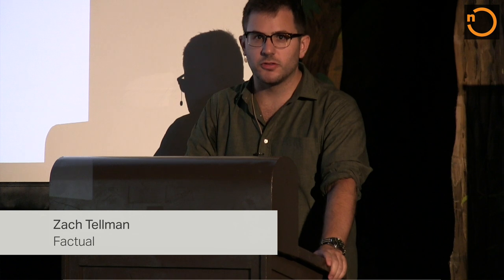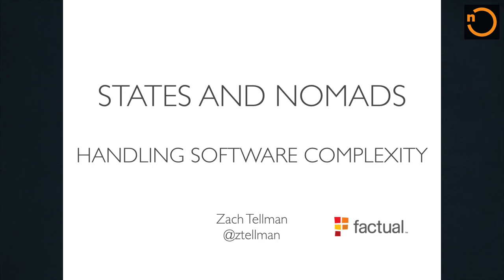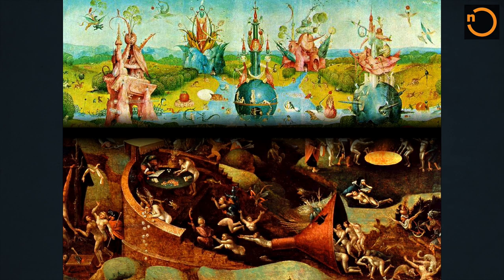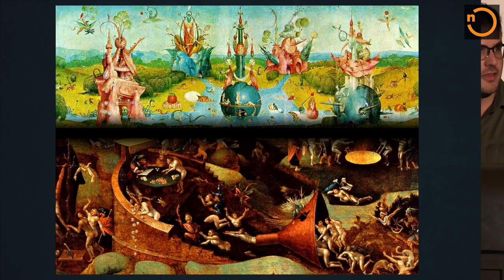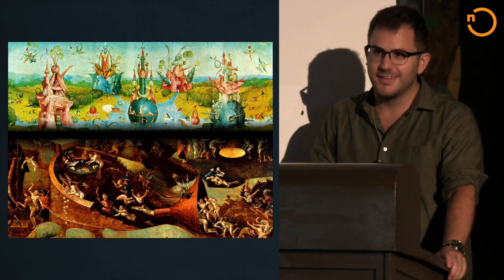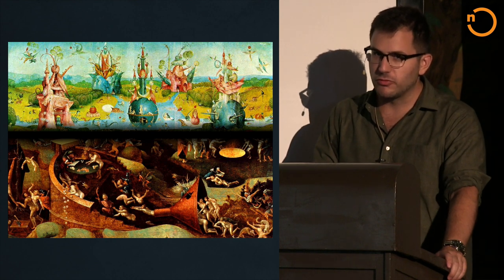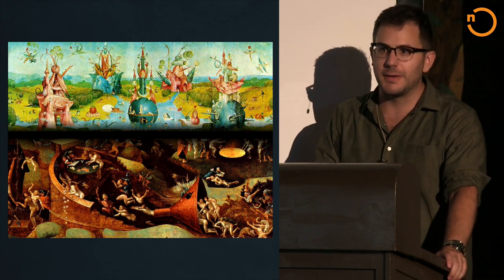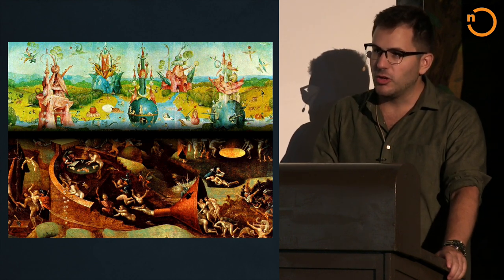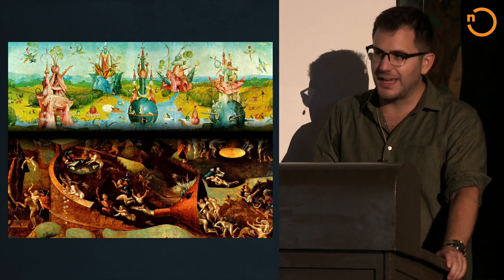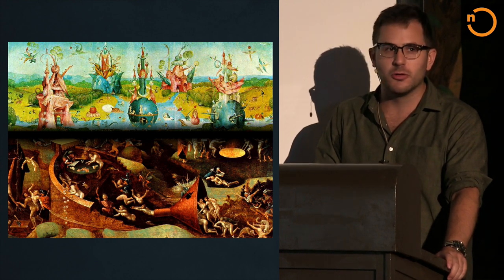In H.G. Wells' The Time Machine, he describes a world populated by two races. The Eloi live above ground in a garden paradise, and the Morlocks toil beneath the Earth to serve the Eloi. But sometimes at night, they come up and eat the Eloi. This can be used as a metaphor for all sorts of things, but I like to think of it as a story about knowledge and innocence. The Eloi live in a paradise they don't fully understand, and sometimes what they don't know comes up and bites them.